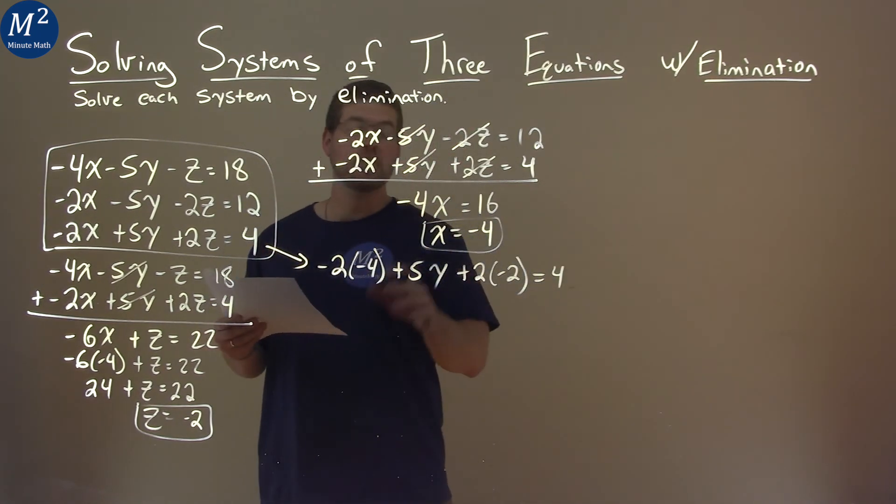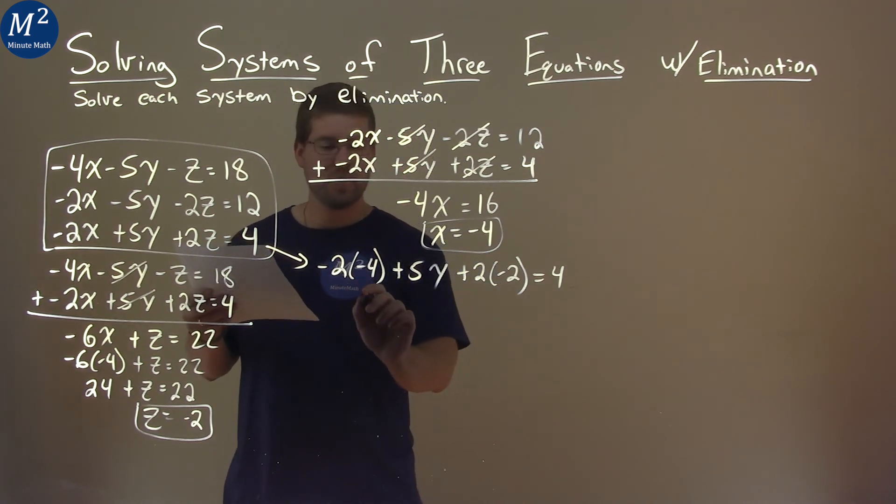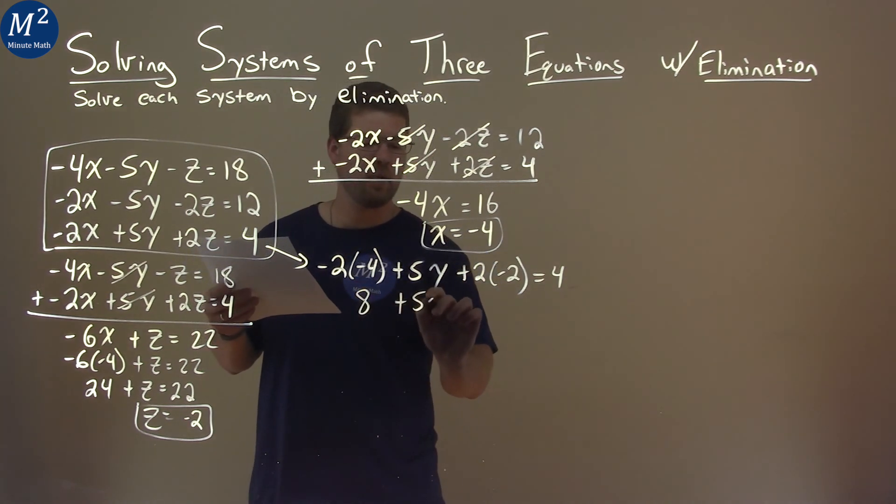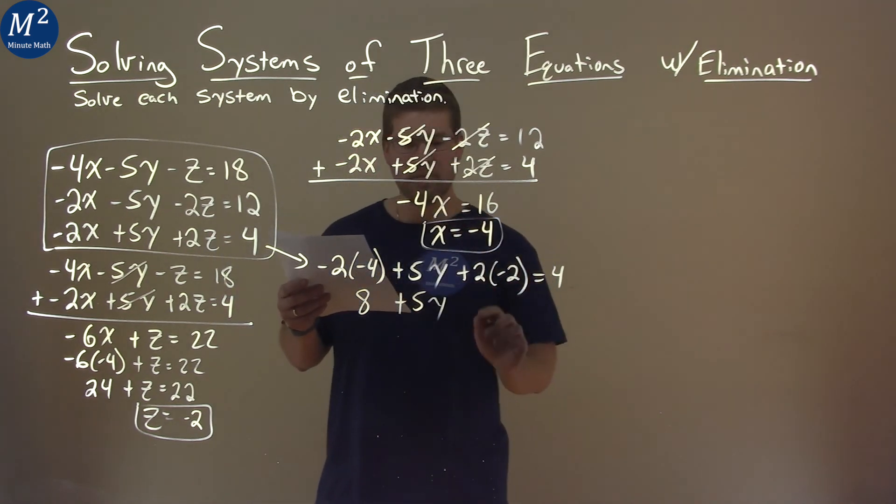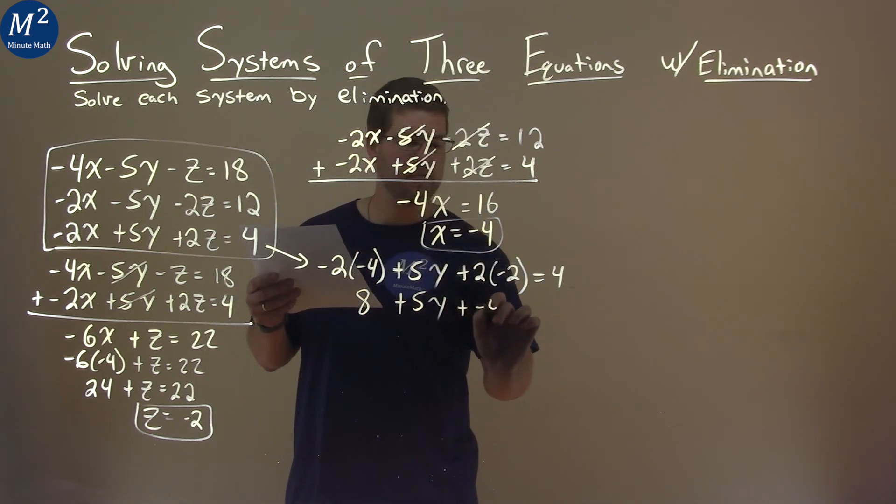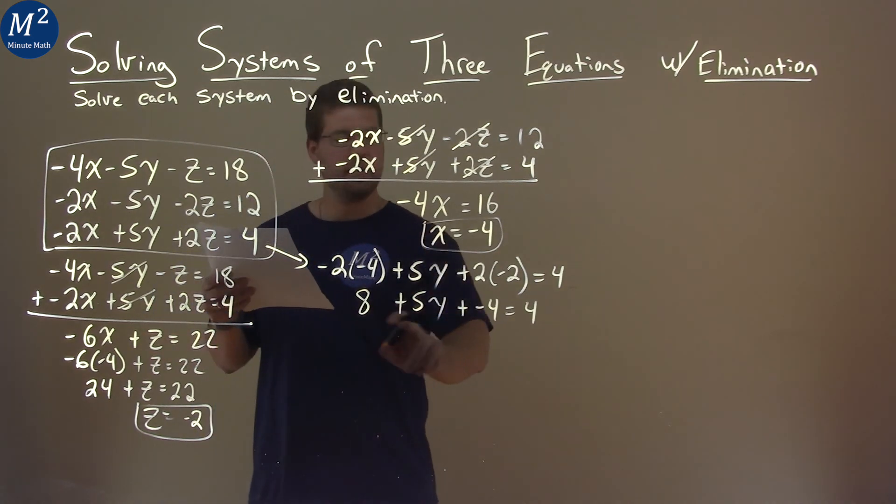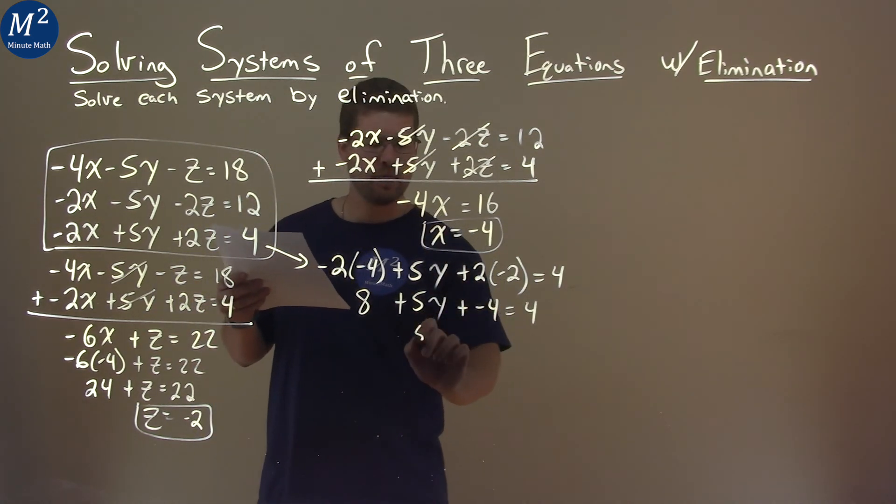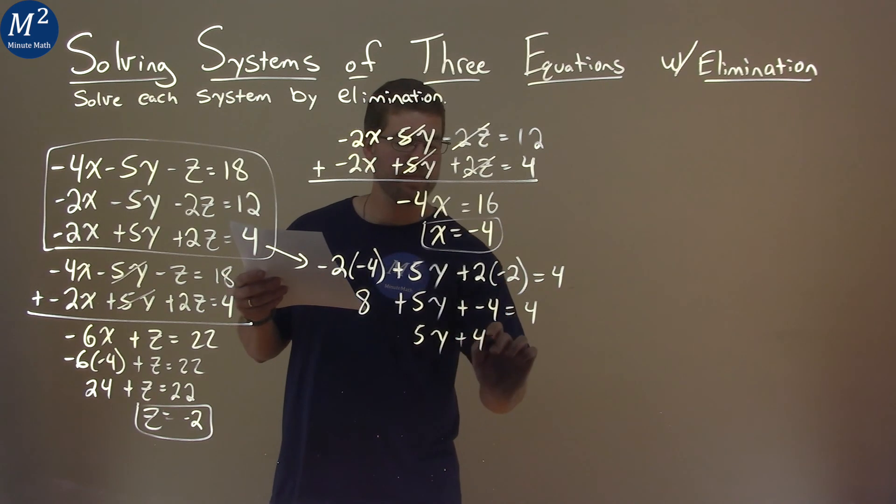So, let's solve for y now. Negative 2 times negative 4 is positive 8, plus 5y, and then 2 times negative 2 is negative 4, and plus negative 4, equals 4. Combine our like terms, 8 plus negative 4 is positive 4, so we have 5y plus 4 equals 4.